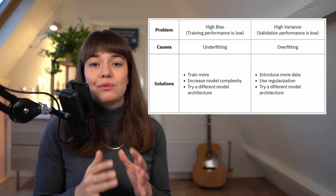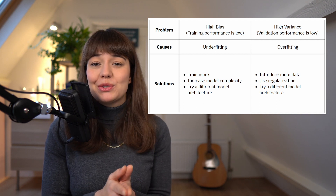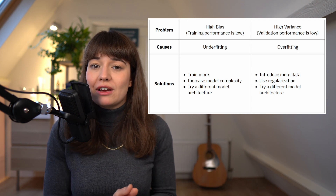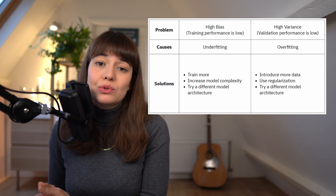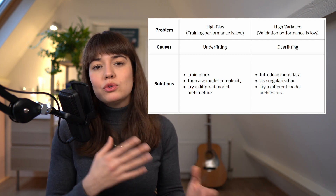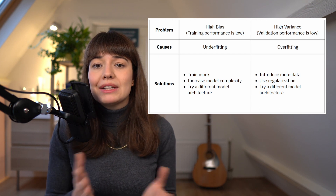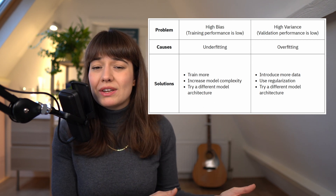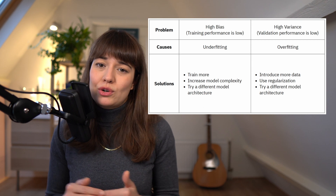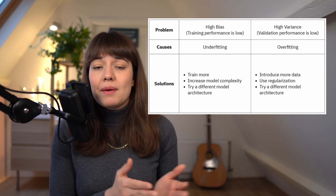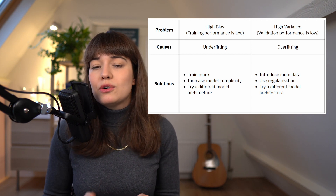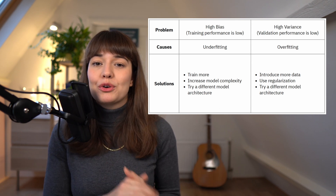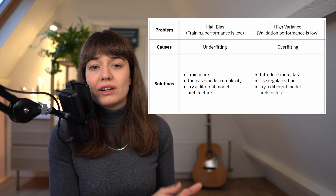If you have high bias, that means you're underfitting. One of the best first things you can try is to train your model more, because maybe you have not trained it enough and your model did not have time to converge to a good solution. Next, you can try increasing the complexity of your model, because maybe your model has too many assumptions and is too simple for the data. For example, if you have a decision tree with maximum depth set to 2, increasing that to 5 or 10 will make your model more complex and lower your bias.